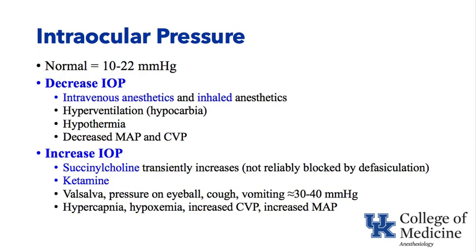Valsalva, pressure on the eyeball, coughing, and vomiting are some of the worst things to raise intraocular pressure. If a patient is light and bucks, Valsalvas, coughs, or vomits, this can raise intraocular pressure 30 to 40 or even more millimeters of mercury. Raising the carbon dioxide, low oxygen levels, increased central venous pressure, and mean arterial pressure can also raise intraocular pressure.